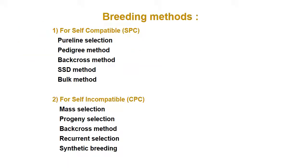The breeding methods used in mustard are pure line selection, pedigree, back cross, single seed descent, and bulk method. For self-incompatible species: mass selection, progeny selection, back cross, recurrent selection, and synthetic breeding are used.